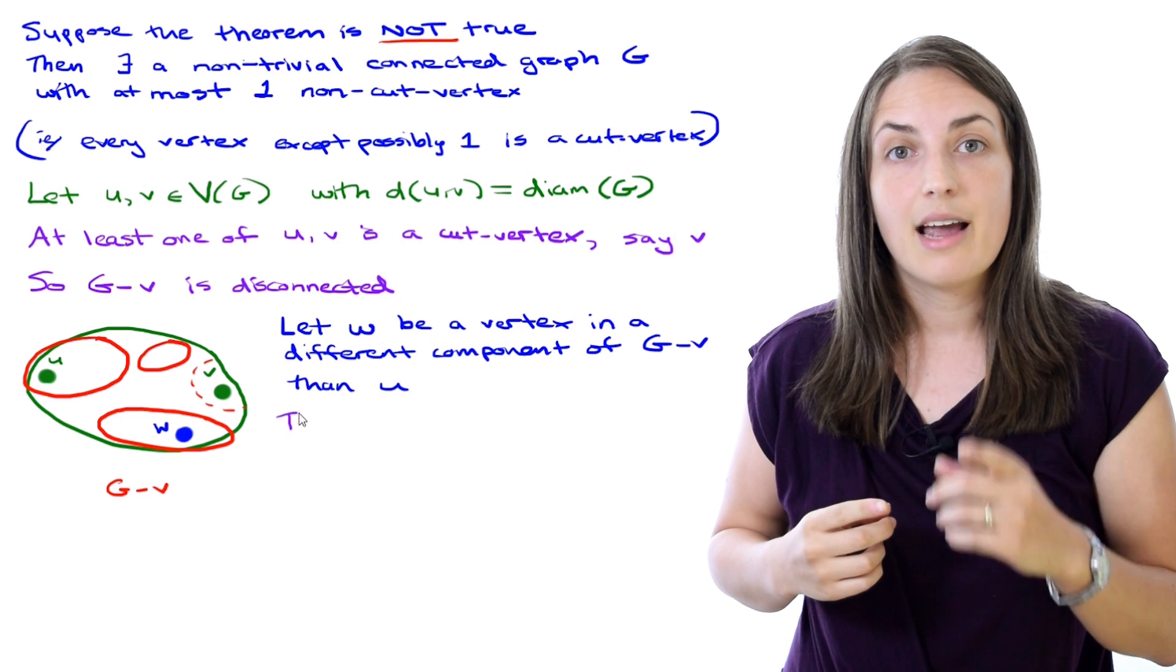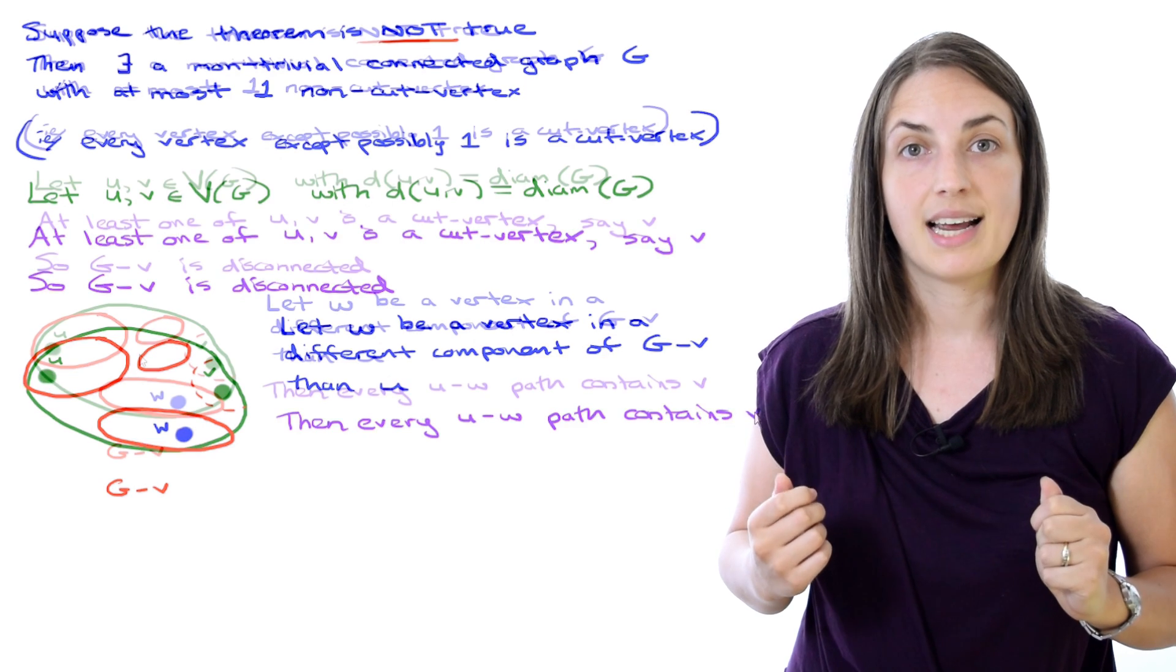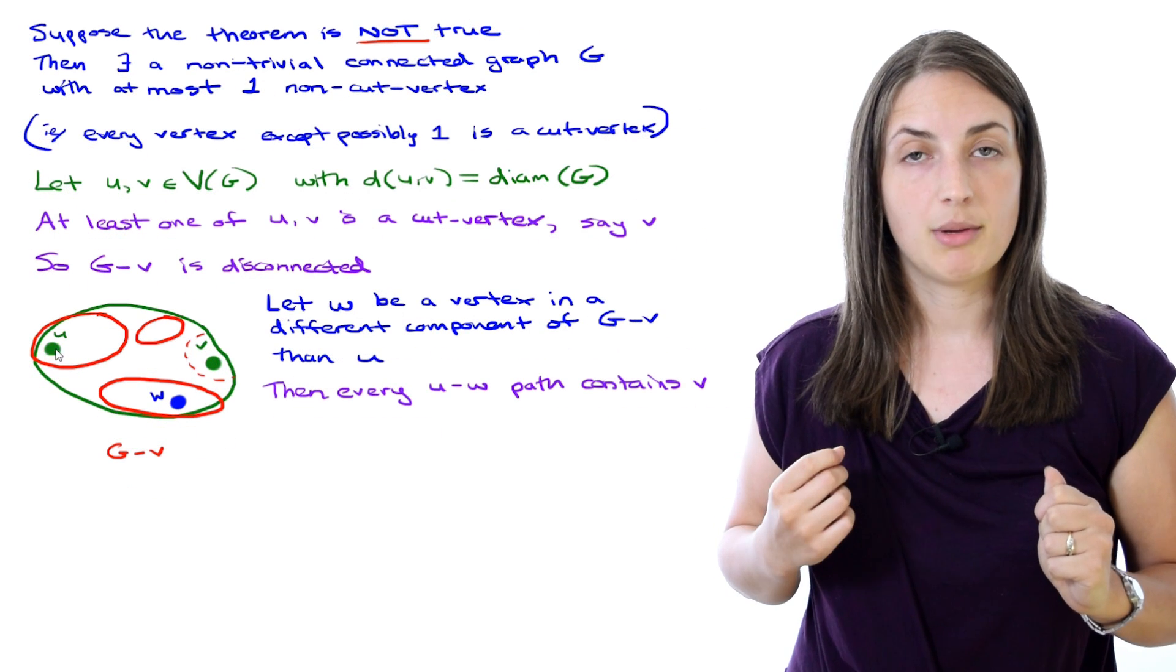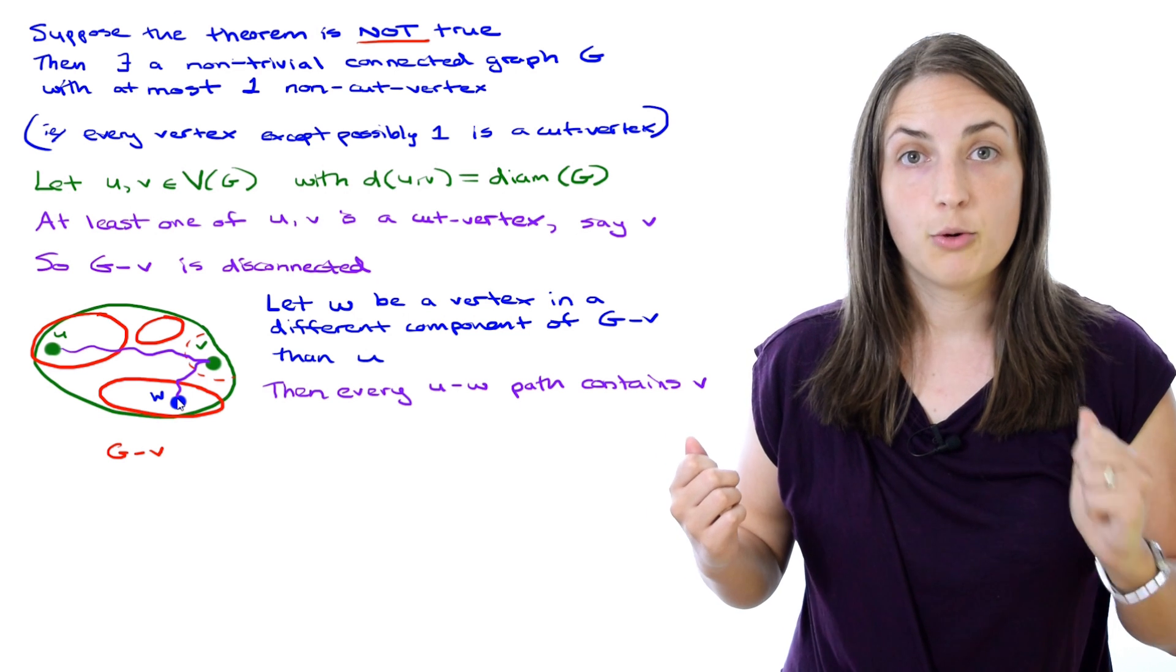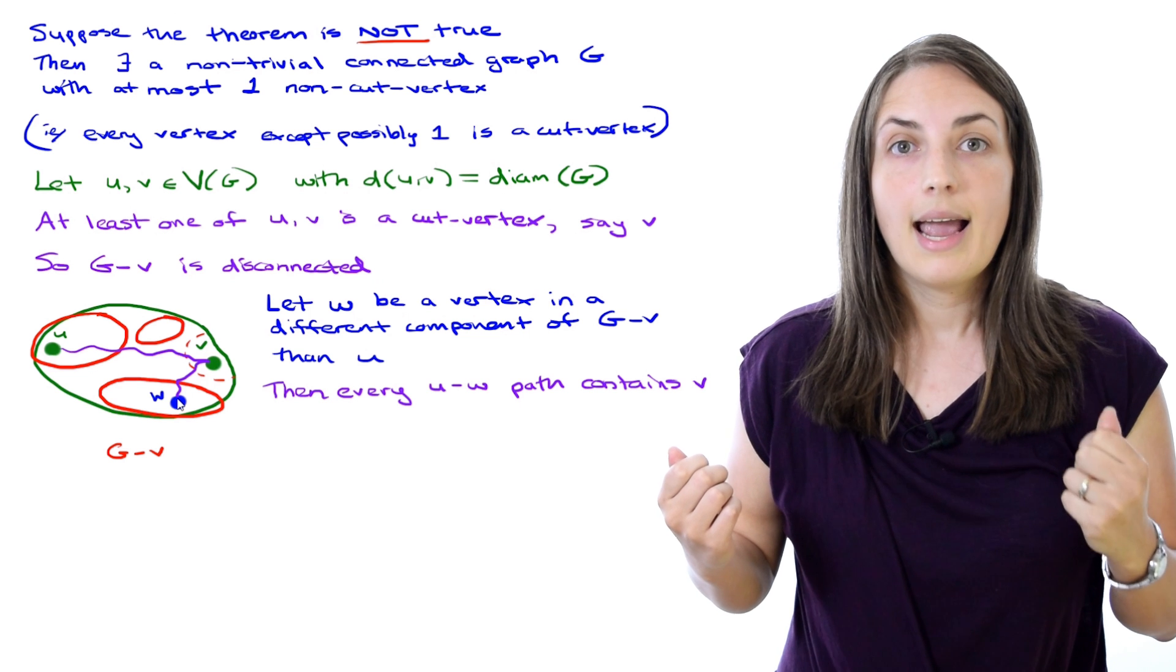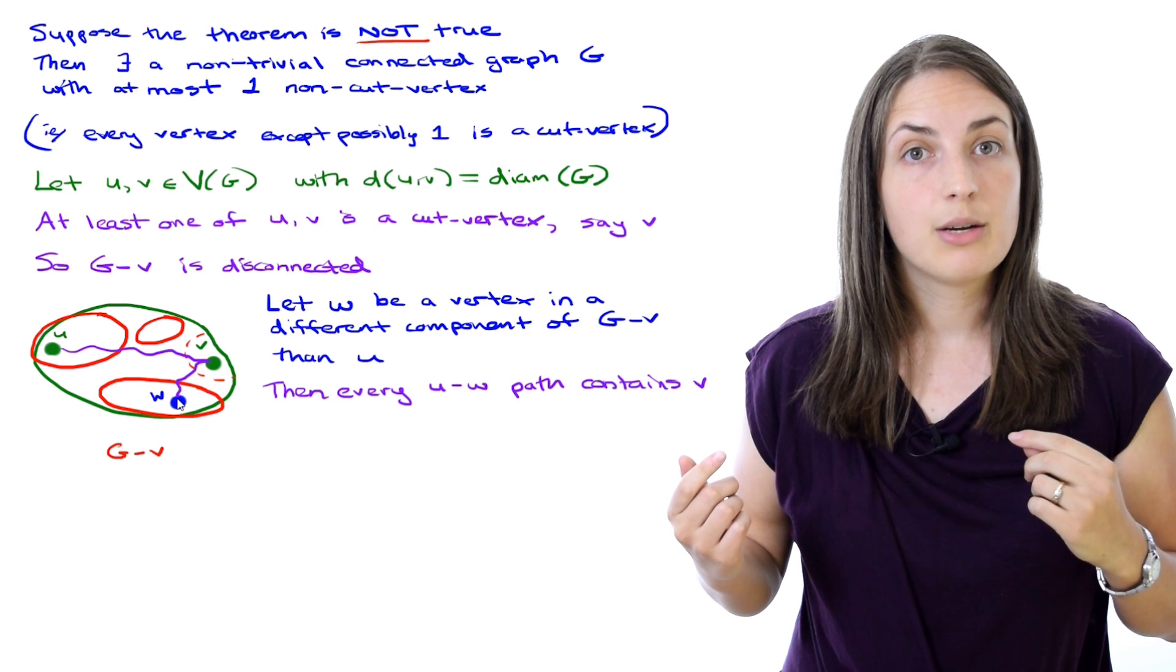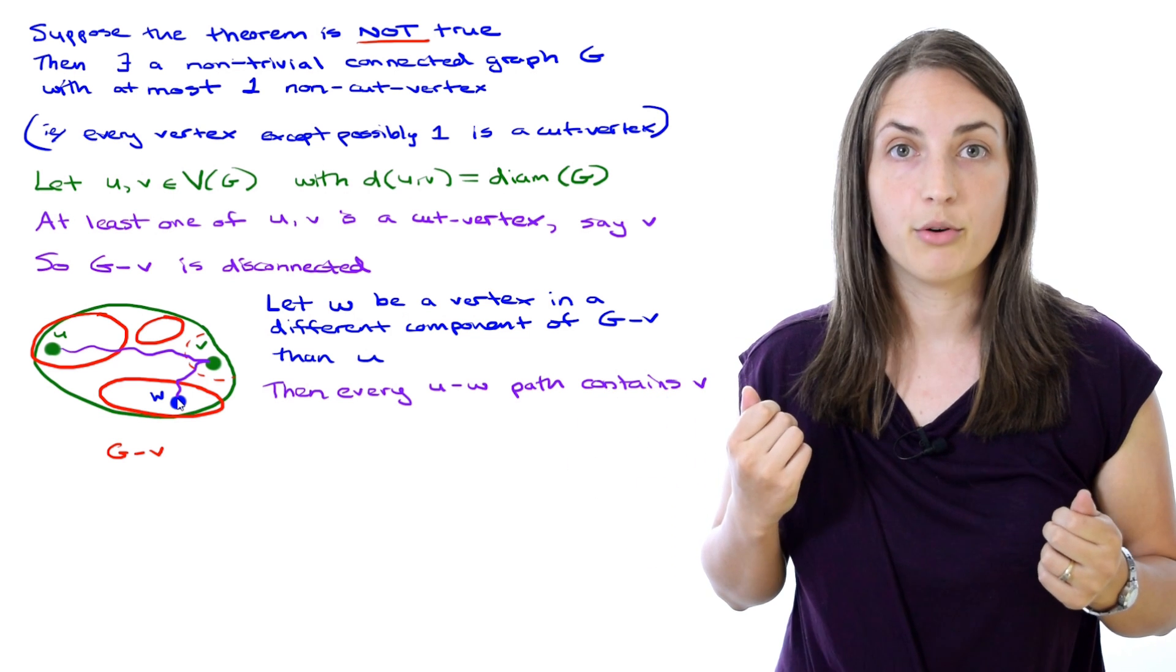Now I know that every u-w path must go through vertex v. We've seen this argument before. It's because there are no u-w paths in the graph without v—they're in different components. So the graph originally was connected, which means all paths that went from one to the other must have gone through that vertex that we removed.